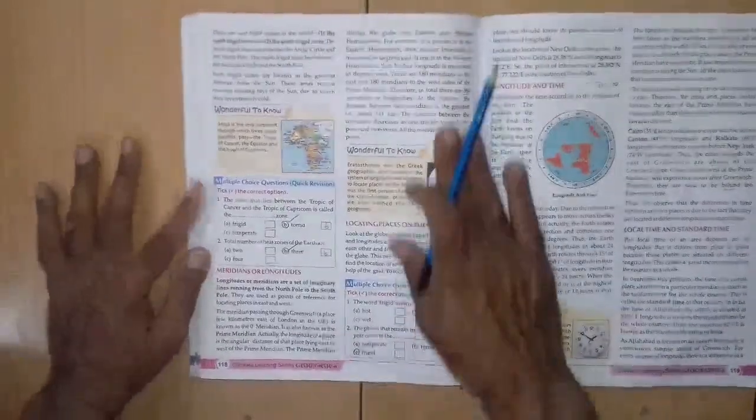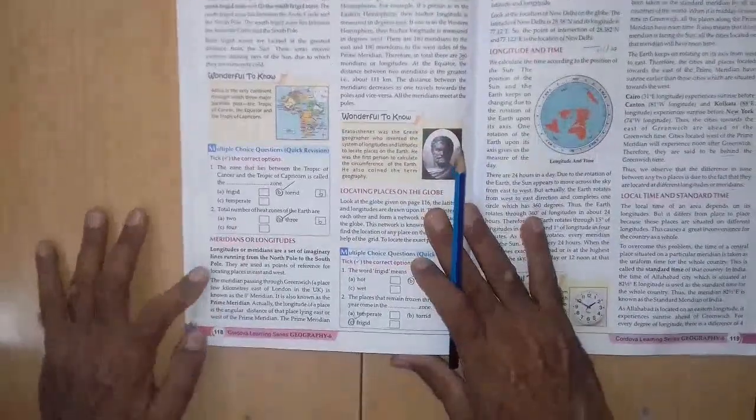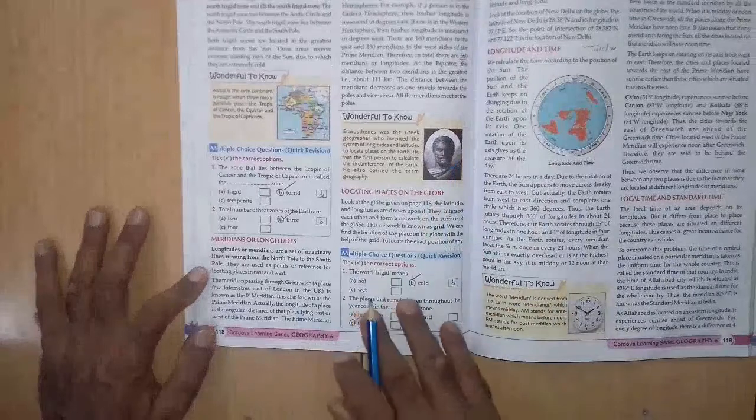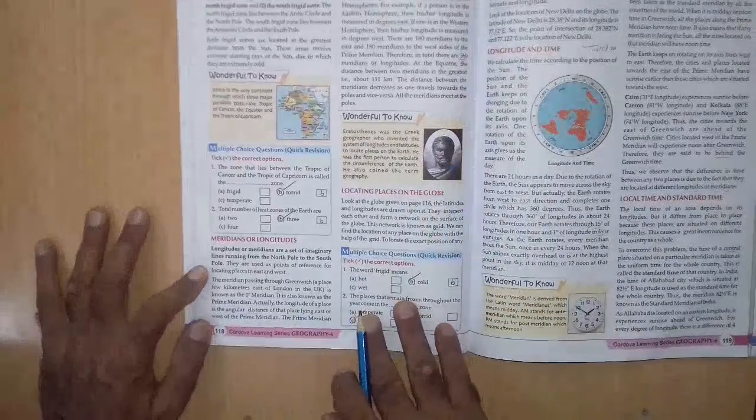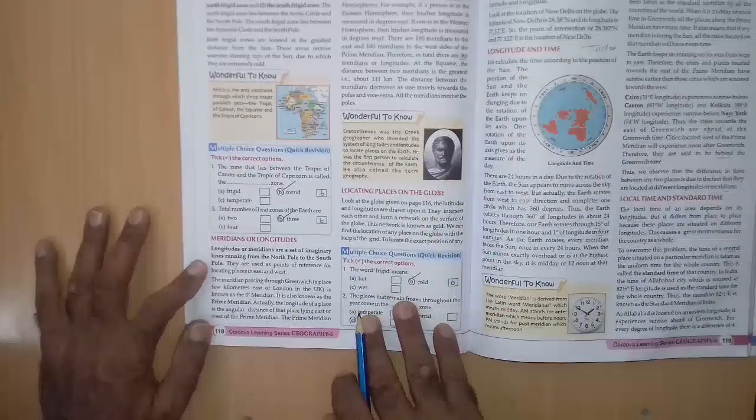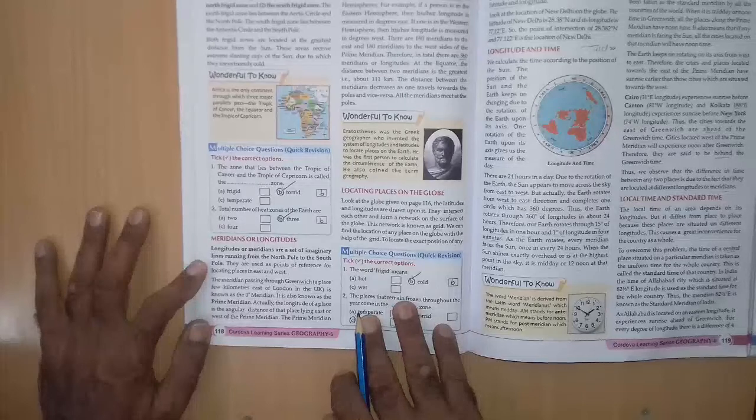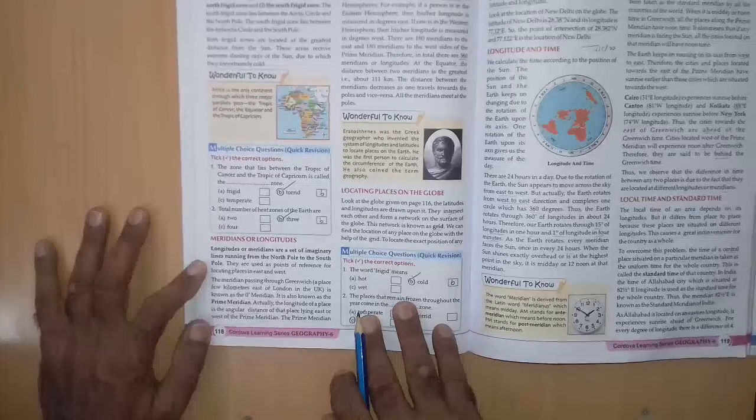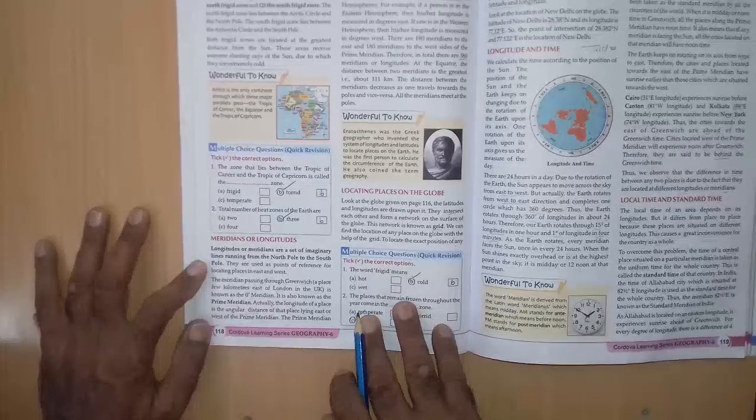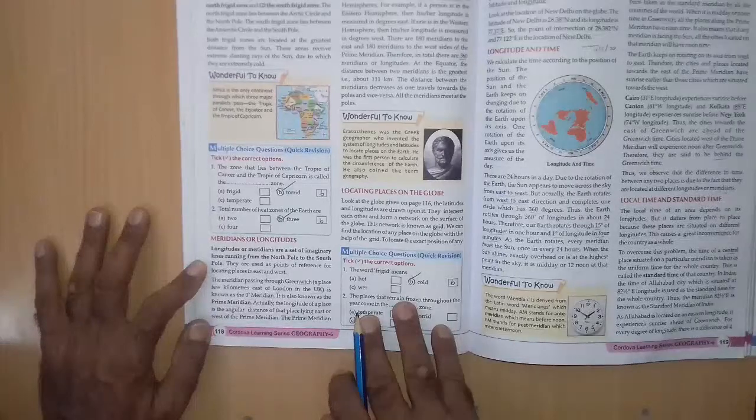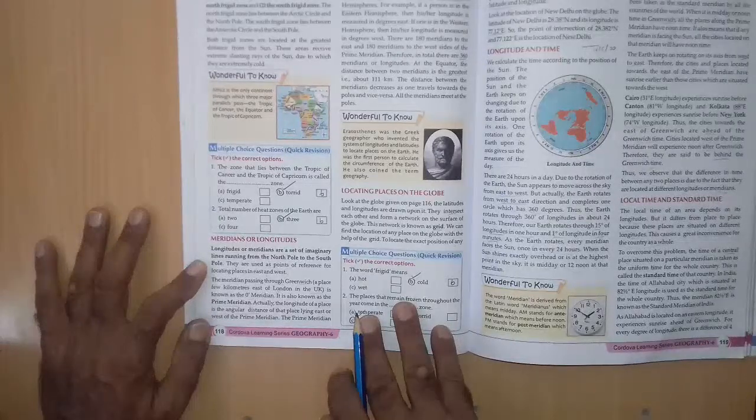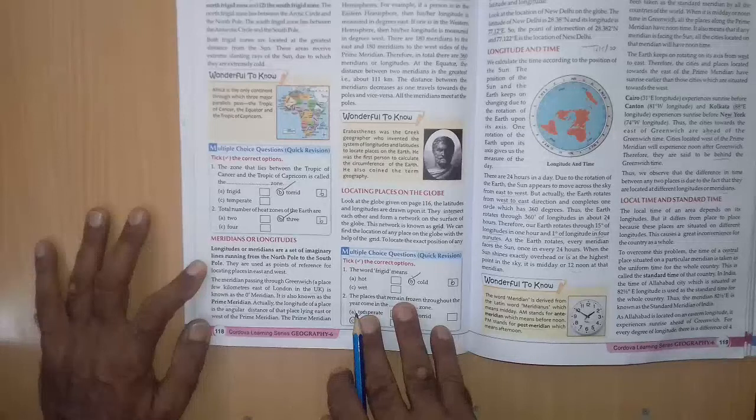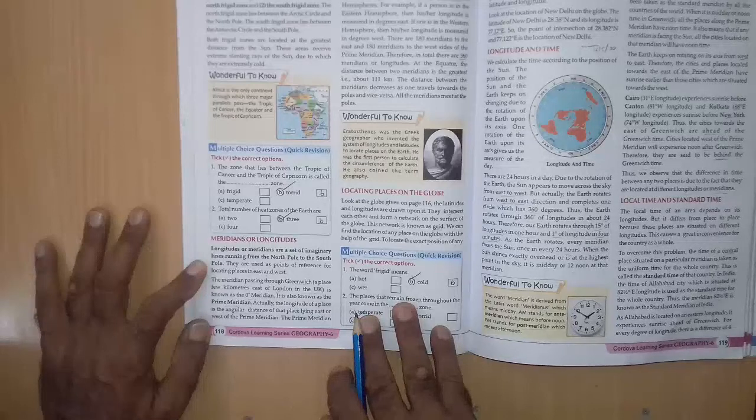Now page number 118. Tick the correct options. First, the zone that lies between the tropic of cancer and the tropic of Capricorn is called the dash zone. A frigid, B torrid, C temperate. Right answer is B torrid zone.